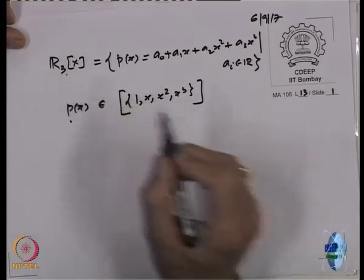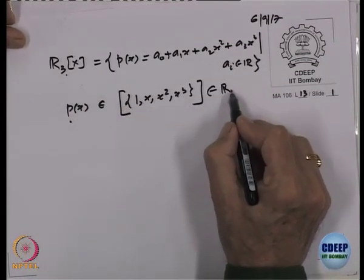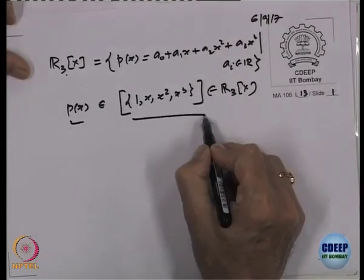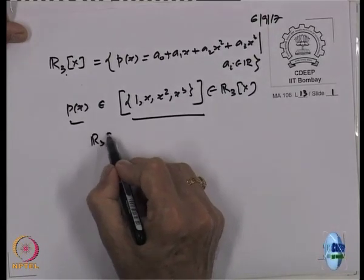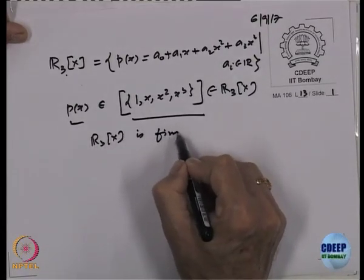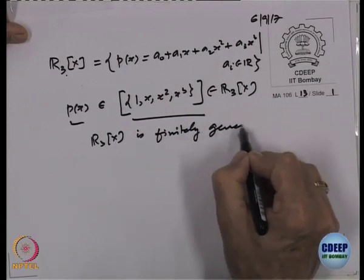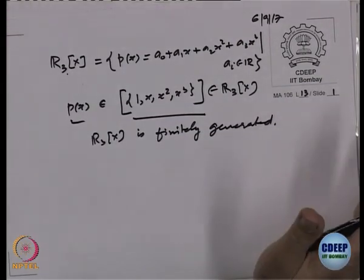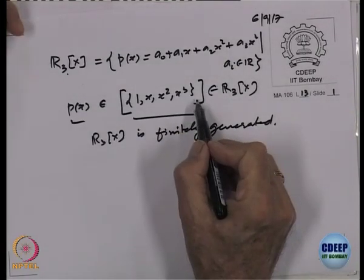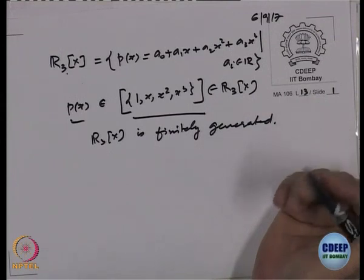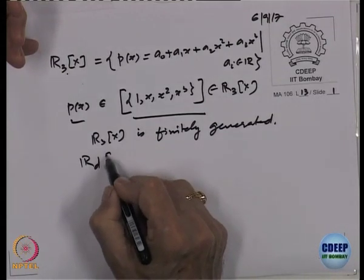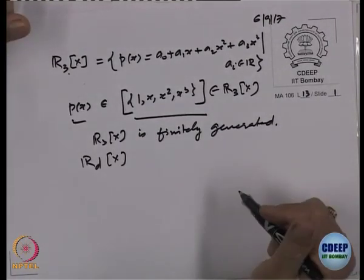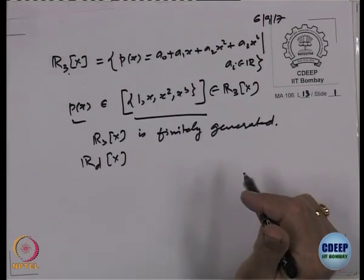Every element of R3[x] is a linear combination of those 4 elements, so R3[x] is finitely generated. The same will be true for any Cd[x] or Rd[x] of any degree d — it is again finitely generated.